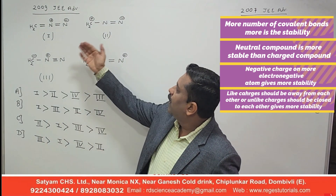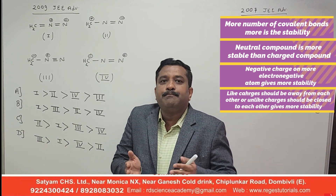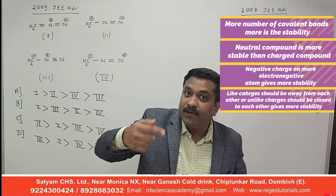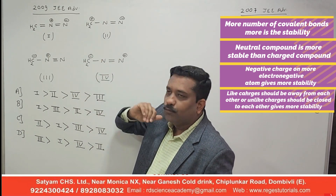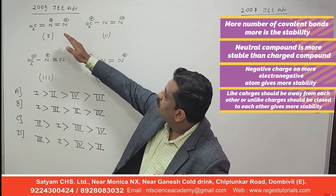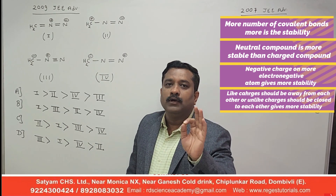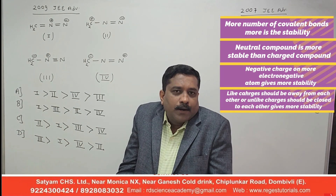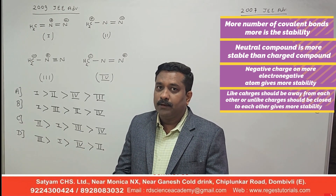So Structures 1 and 3 each have two pi bonds, while Structures 2 and 4 have only one pi bond. Therefore Structures 1 and 3 get more stability compared to 2 and 4 because they have more covalent bonds. Now we activate Rule 2 to determine the order between 1 and 3, since they have the same number of covalent bonds. Checking whether either is neutral — both Structure 1 and Structure 3 are charged, so Rule 2 does not give us the answer.